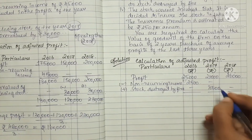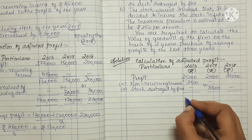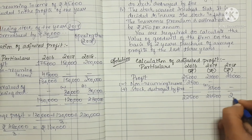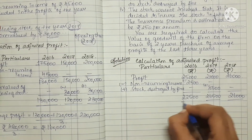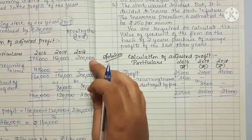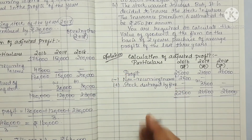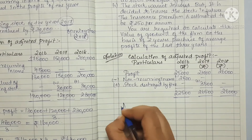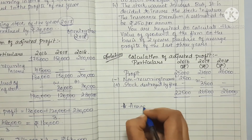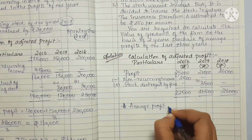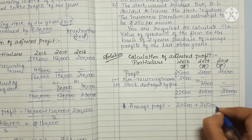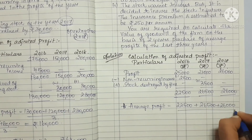For adjustments: 2016 profit minus non-recurring income of 2,500 gives 22,500. 2017 profit plus 3,500 (stock destroyed added back) gives 26,500. 2018 profit is 26,000. We substitute into the formula: total profit equals 22,500 plus 26,500 plus 26,000 divided by 3.